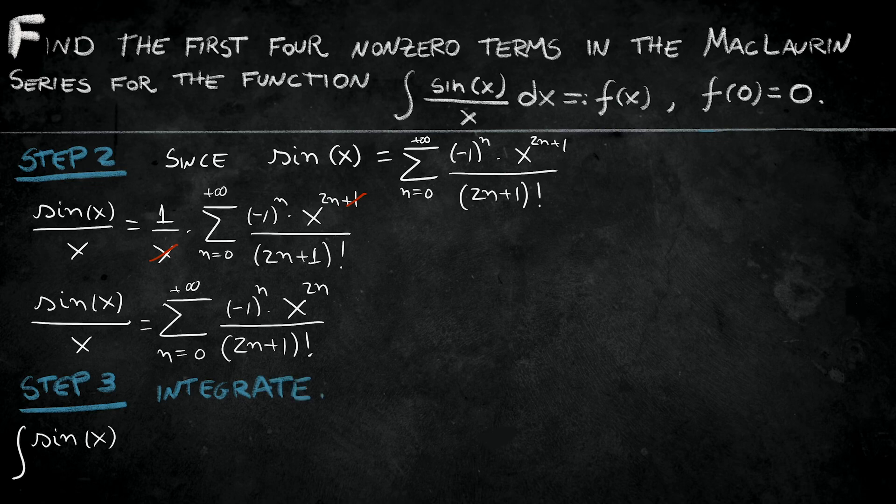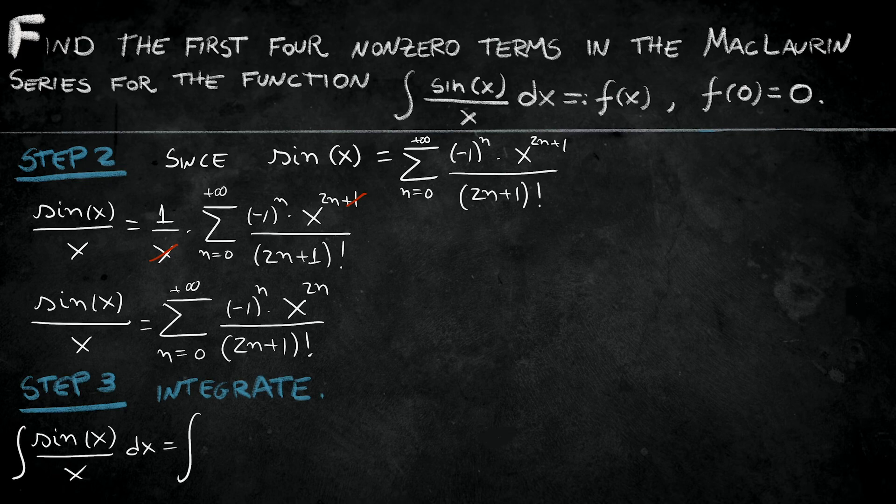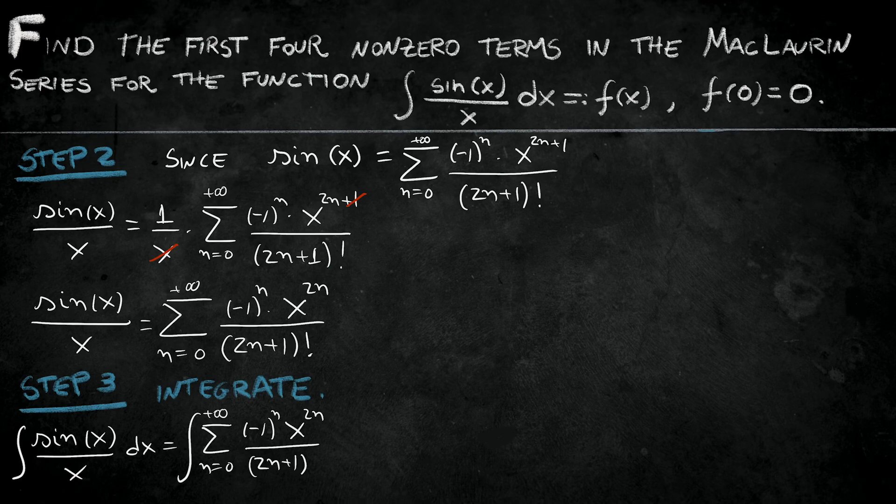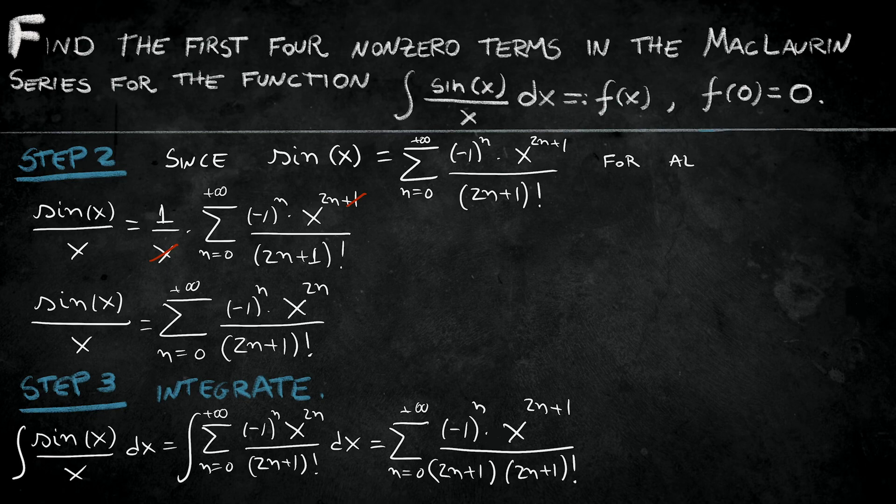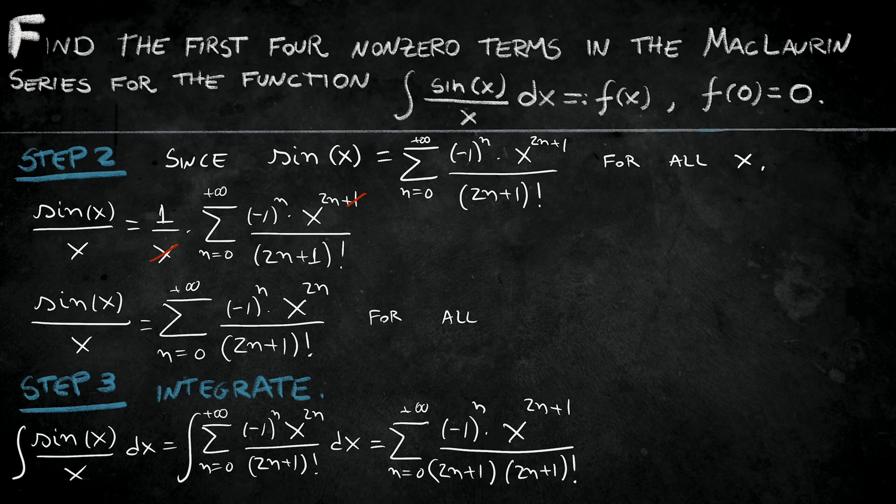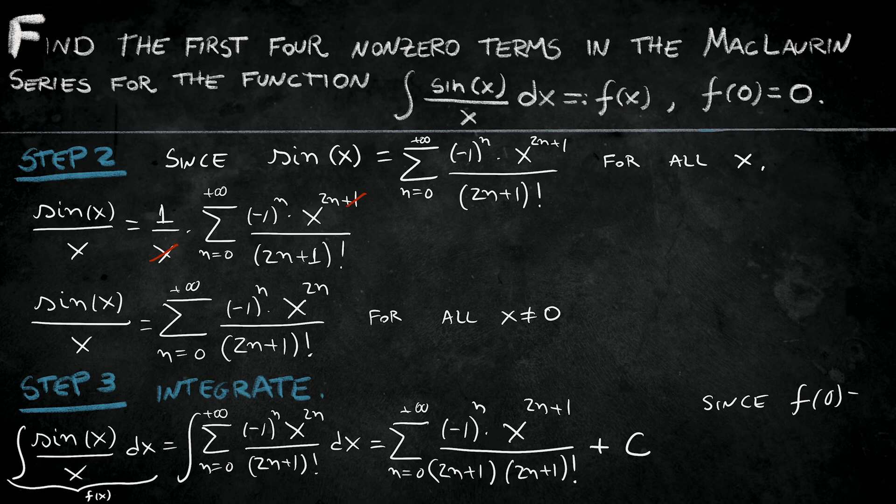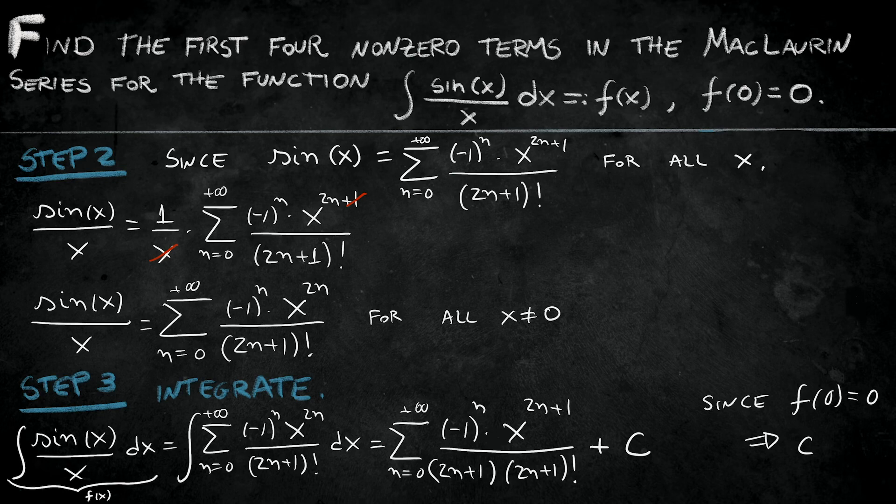Integrating both sides, we're going to find that my integral is going to be equal to the series from n equals 0 to positive infinity of minus 1 to the power n times x to the power 2n plus 1 over 2n plus 1 from the integration times 2n plus 1 factorial that we had before. But we have to add a constant c because we are applying the integral. But at the beginning we said f of 0 is equal to 0.